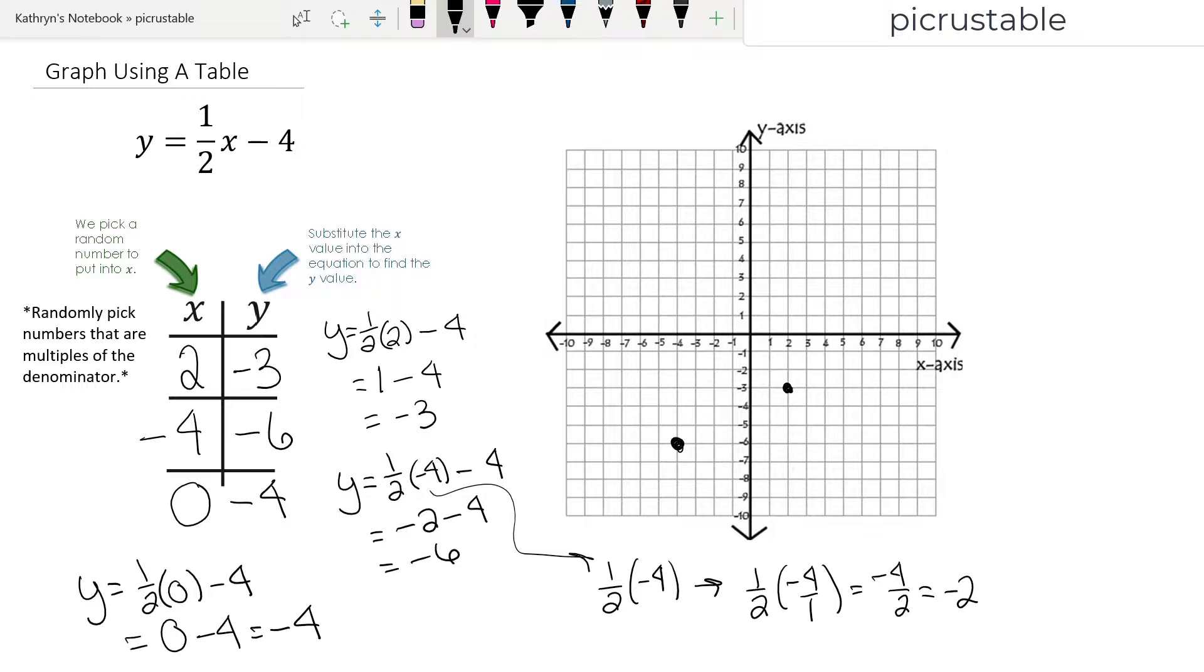And then lastly, we have 0, negative 4. So I'm going to go 0 on the x. I'm not going anywhere. I'm staying here and then going down to negative 4. And now we're going to draw a line. I'm going to try my best here to draw a straight line.